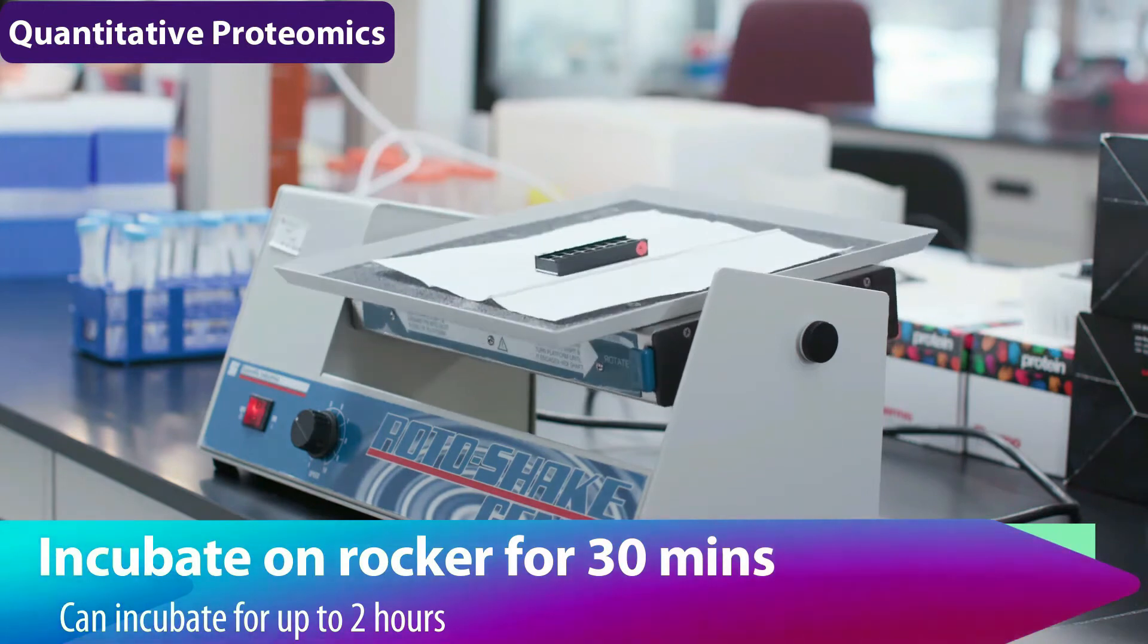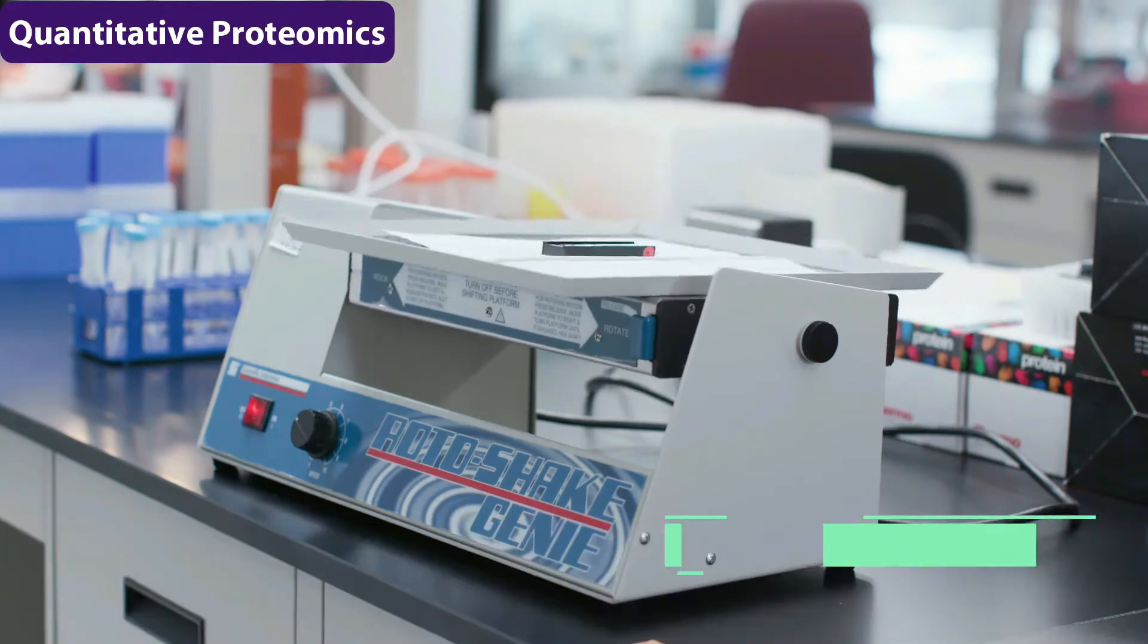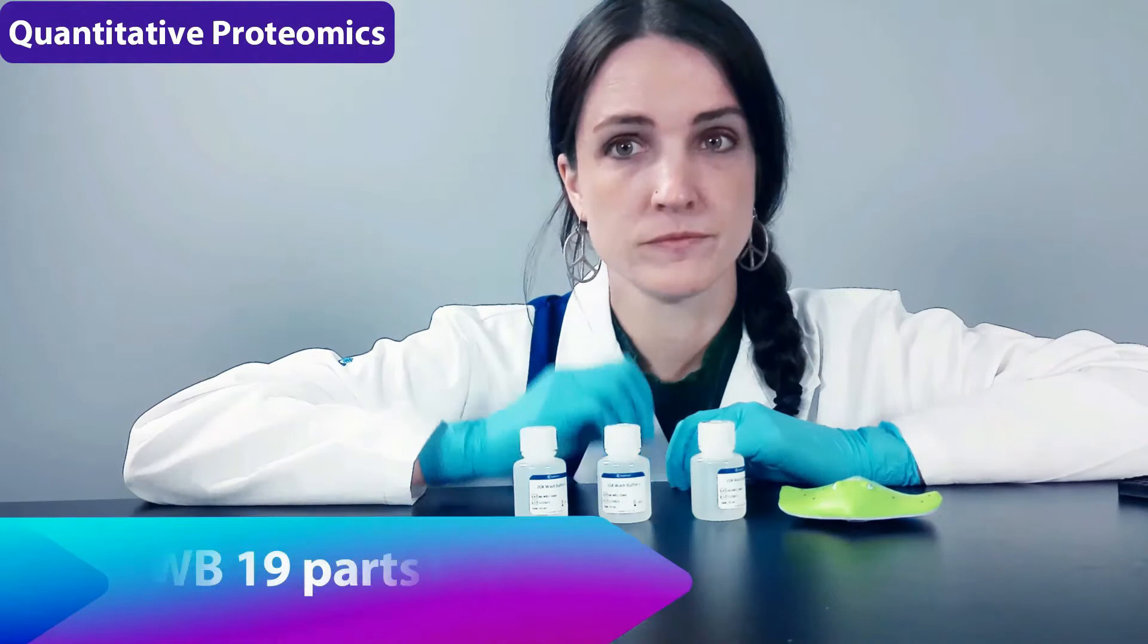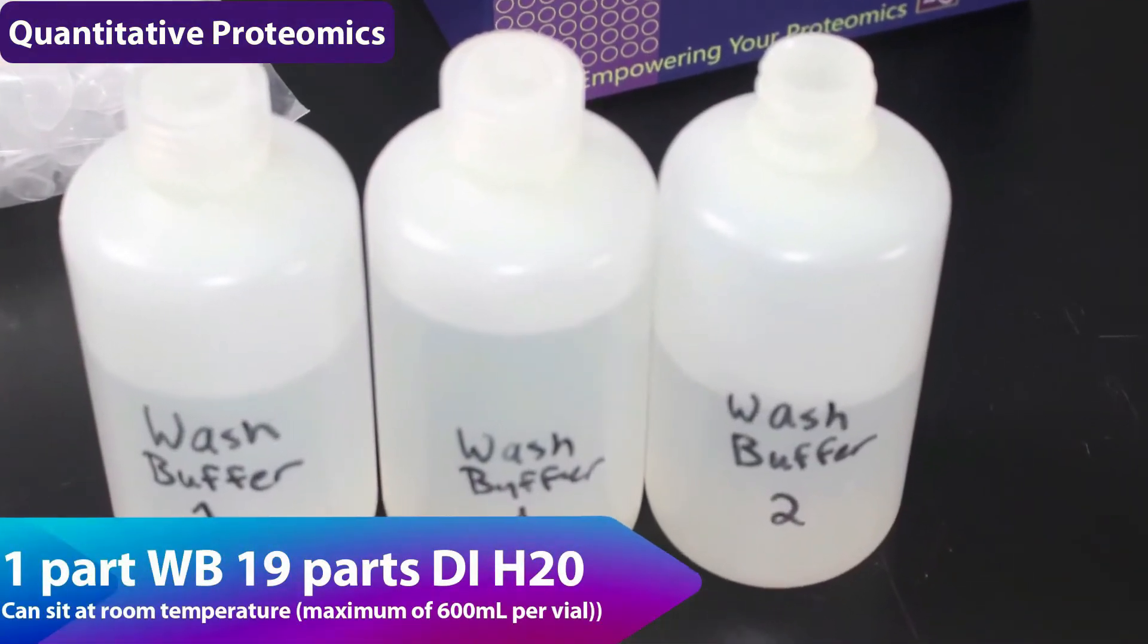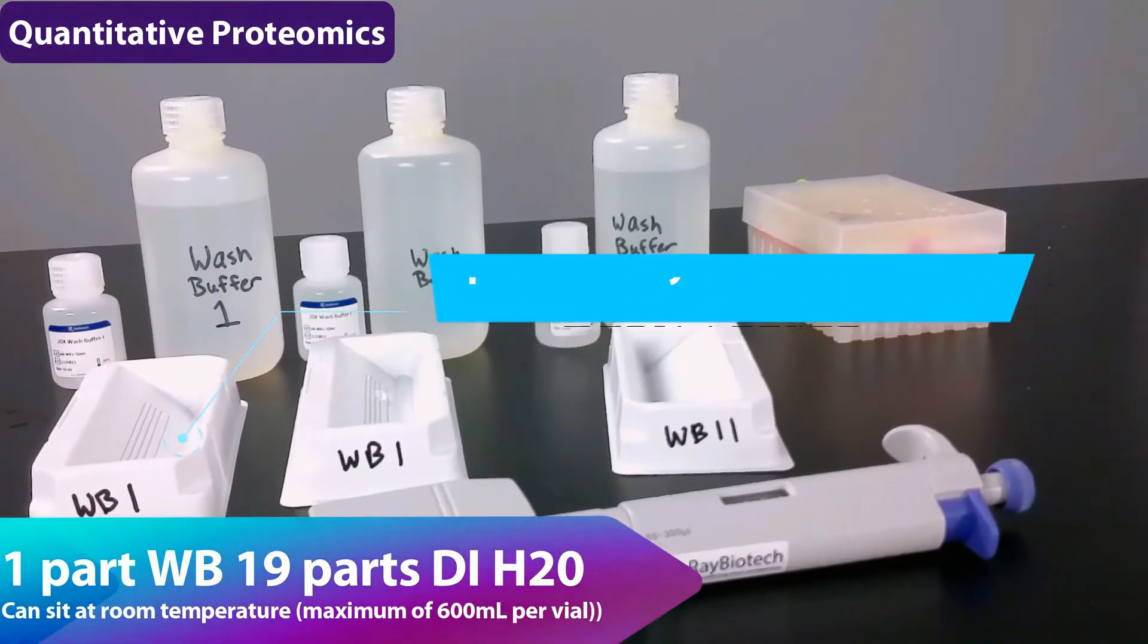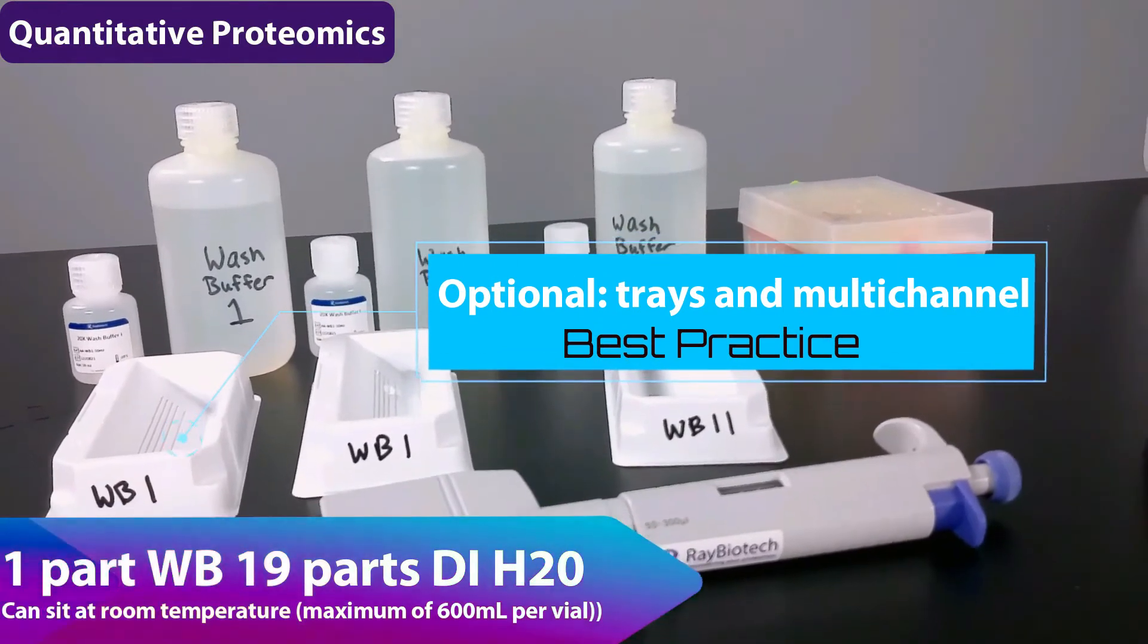While that is incubating, we're going to prepare our reagents. So first is going to be the three wash buffers. That's going to be one part wash buffer and 19 parts deionized water. The easiest way to use these wash buffers is with trays and a multi-channel.